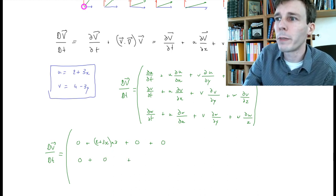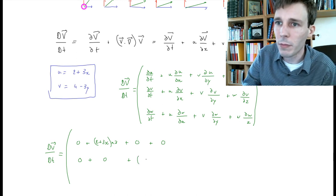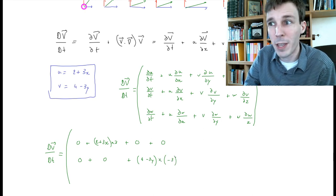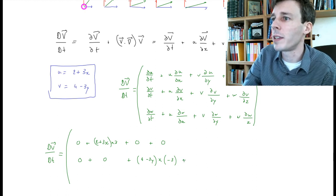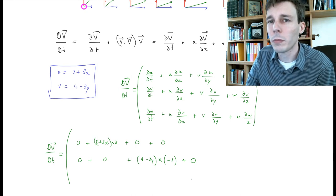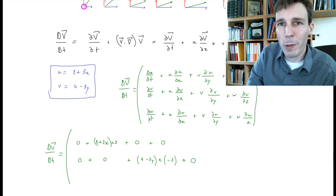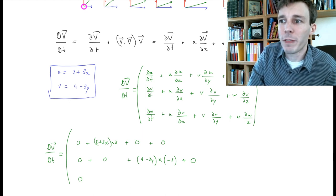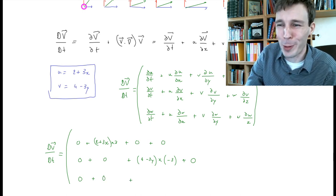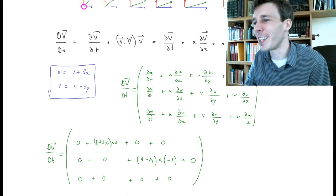Continuing the y-component: w·(∂v/∂z) = 0. For the z-component, w = 0 throughout, so every term is zero. Simplifying the results: the x-component gives 6 + 9x, the y-component gives −12 + 9y, and the z-component is 0.